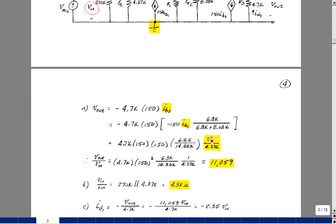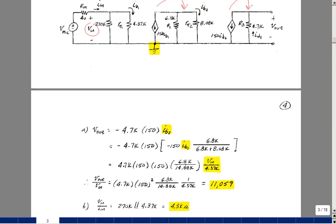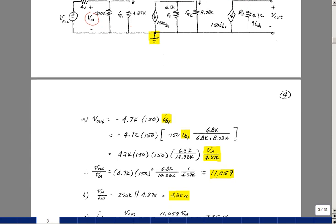So it's just V in divided by 4.37 K for the current I sub B1. So now I've got V out in terms of V in, which you notice here, I've got the AC beta twice. I'm getting that squared. That's going to give me a lot of gain, around 11,000.